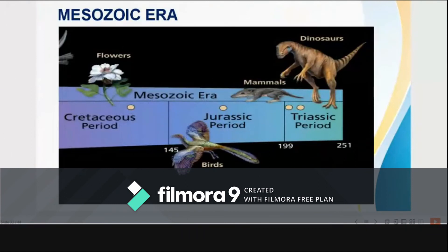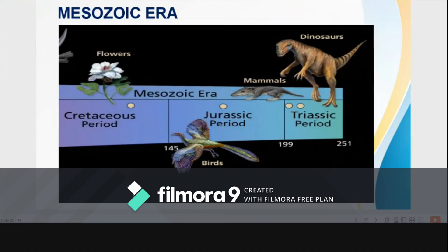The Mesozoic era started around 245 million years ago and lasted for 180 million years. It is subdivided into three periods: Triassic, Jurassic, and Cretaceous. Movement of the tectonic plates was milder during this era. The most significant landmass activity was the gradual rifting of the supercontinent Pangaea — this split Pangaea into a northern continent, Laurasia, and the southern continent, Gondwana. This created the passive continental margin that characterizes most of the Atlantic coastline. By the end of this era, the continents had rifted into nearly their present form — Laurasia became North America and Eurasia, while Gondwana split into South America, Africa, Australia, Antarctica, and the Indian subcontinent.